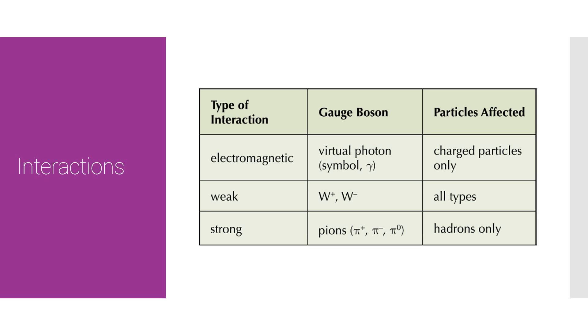The gauge boson for the electromagnetic interaction is a virtual photon. For the weak force, it's a W boson, W plus and W minus. And for the strong force, the boson is actually pions. So the pions are the exchange particle in a strong interaction, the W plus and W minus are the exchange particle in weak interactions, and the virtual photon are the gauge bosons in the electromagnetic interaction.